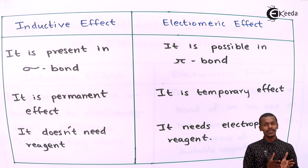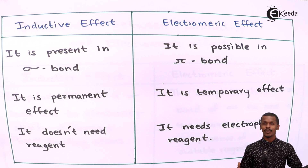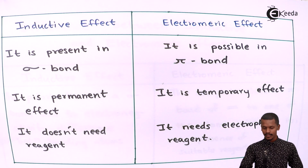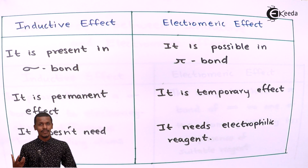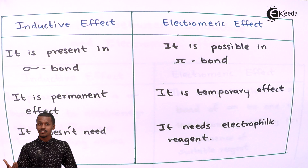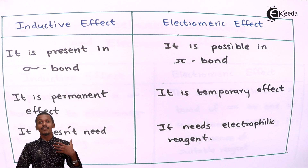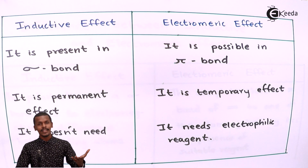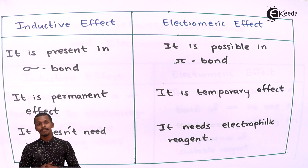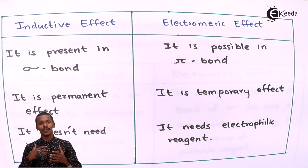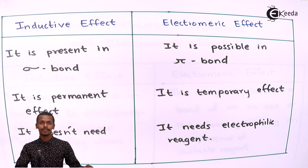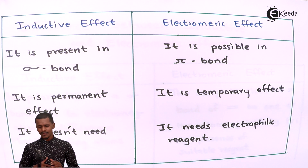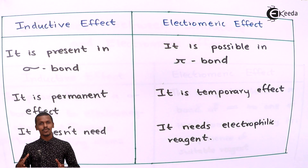A further difference: the inductive effect does not need any reagent — it is observed in a molecule simply because of the electronegativity difference causing polarity. The electromeric effect, however, arises because of the reagent involved. To exhibit this effect, a particular electrophilic or suitable reagent is needed — either to induce polarity in a non-polar molecule or to enhance the existing polarity of a polar molecule. Therefore, the electromeric effect requires an electrophilic reagent.